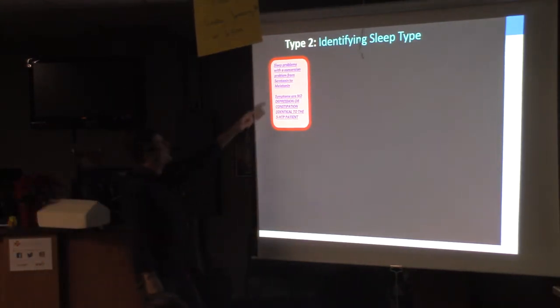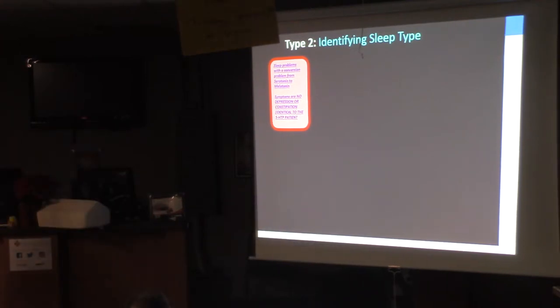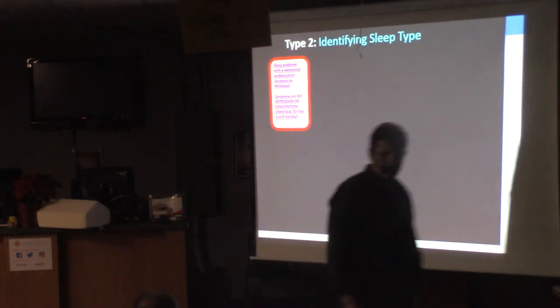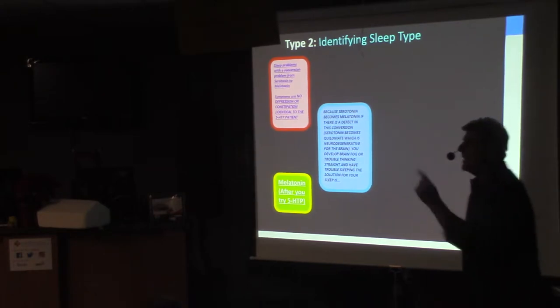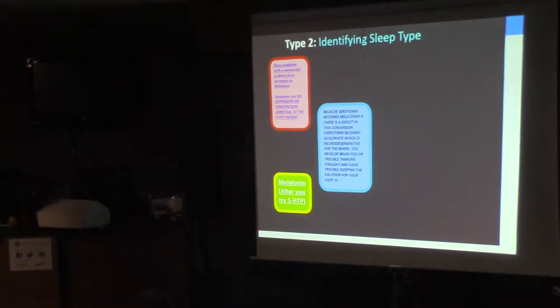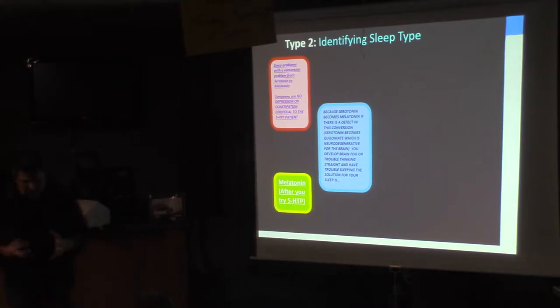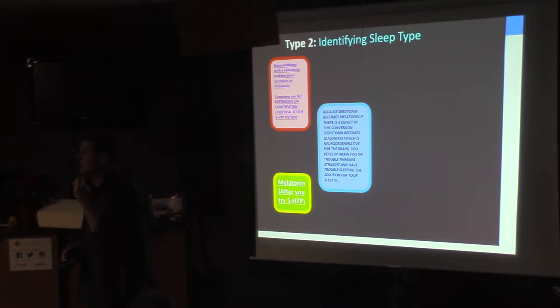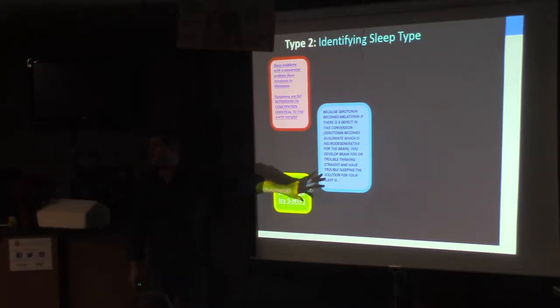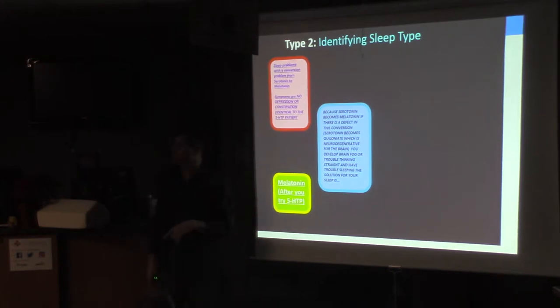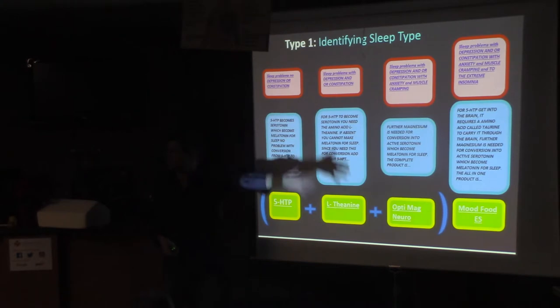Sleep type number two. This person has a problem with conversion of serotonin to melatonin. It is a defect in your body. You cannot make melatonin. You with me? So what's going to happen? You're going to have to take melatonin. You just have to do it. Now, if you get creepy dreams when you take melatonin, it's because your body's making melatonin. You need 5-HTP. 5-HTP becomes melatonin. So you already have melatonin. You take melatonin, it's going to give you creepy dreams. So if you don't know, and there's no way to test for this outside of ripping your brain apart, and I'm not going to do that, start with 5-HTP. If that doesn't work, then you do the melatonin.